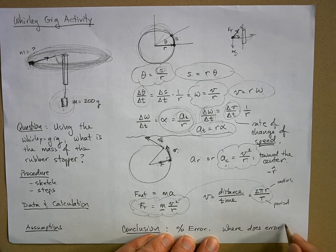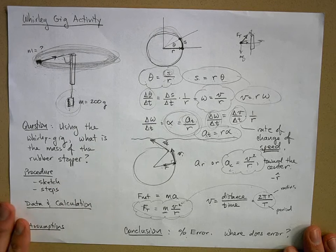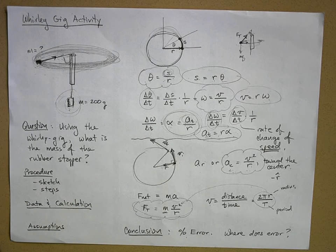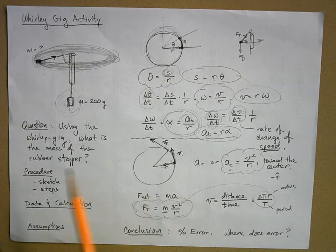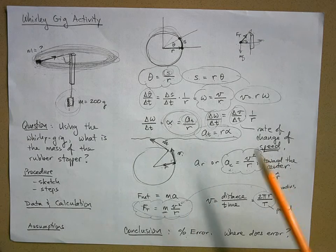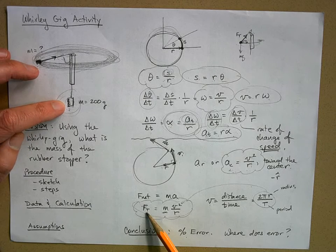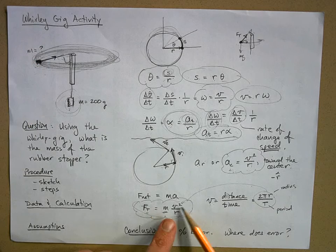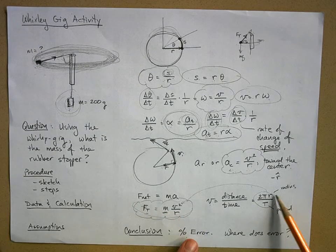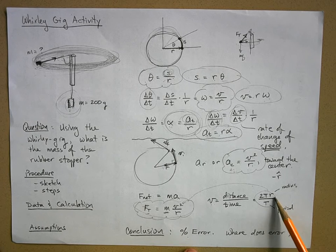Also discuss where any error comes from. Now, looking at the equation: we know the hanging mass, so we can calculate tension. To find speed we need the radius — I'll show you how to measure that in a minute, and I'll hand out meter sticks.